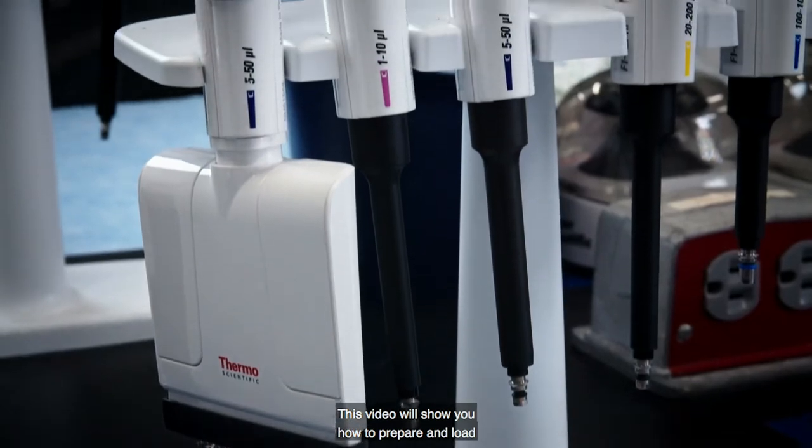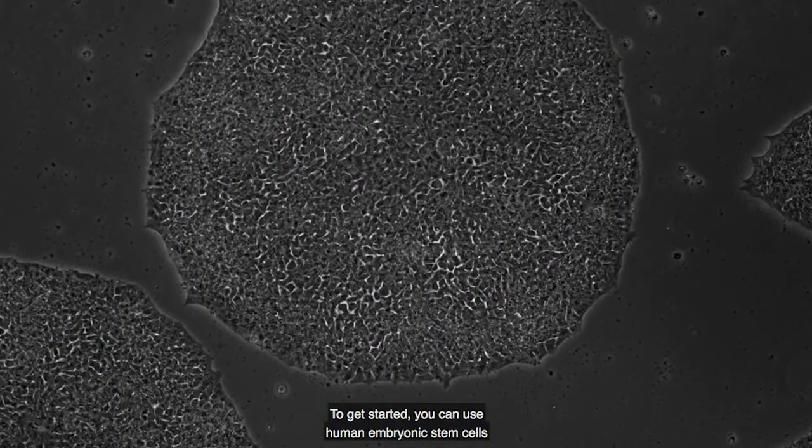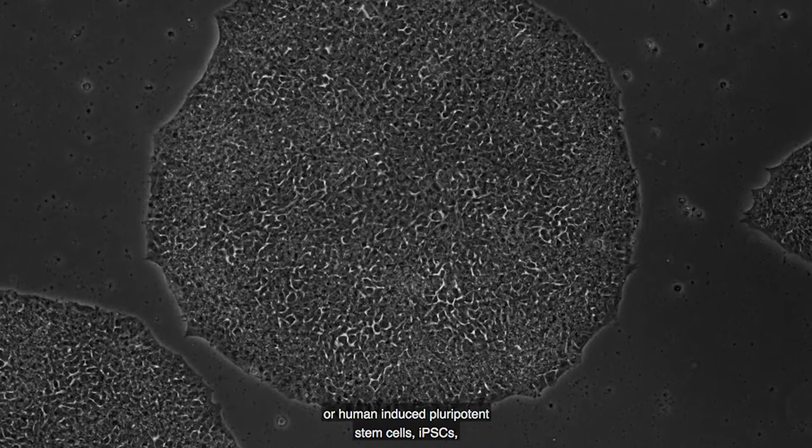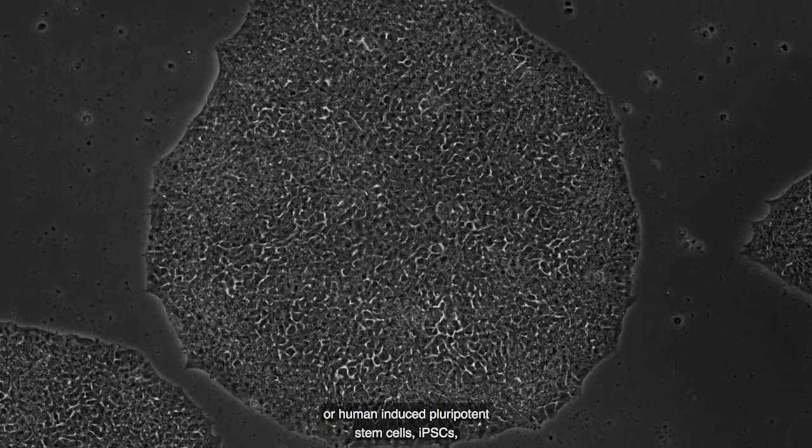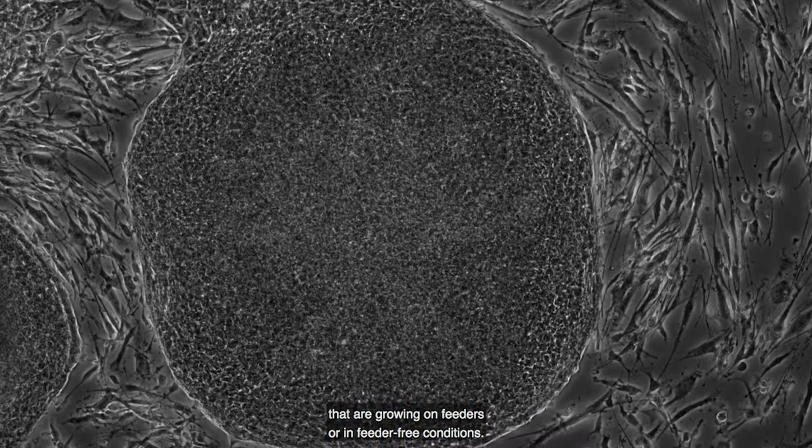This video will show you how to prepare and load your HPSC scorecard plate. To get started, you can use human embryonic stem cells or human-induced pluripotent stem cells that are growing on feeders or in feeder-free conditions.